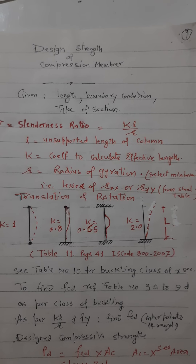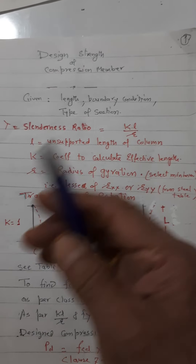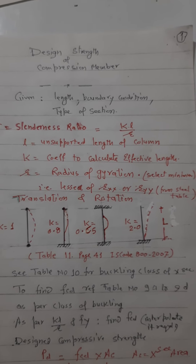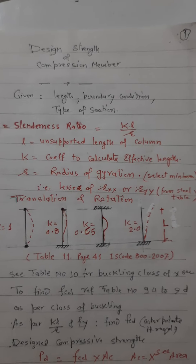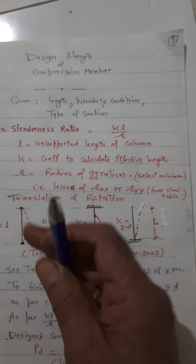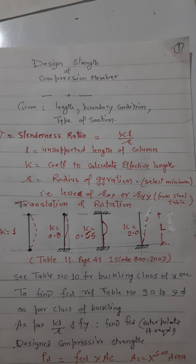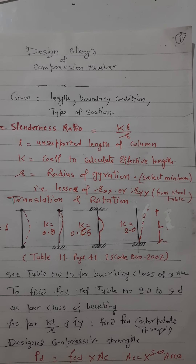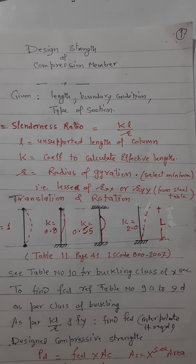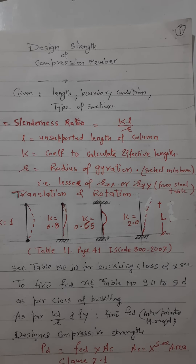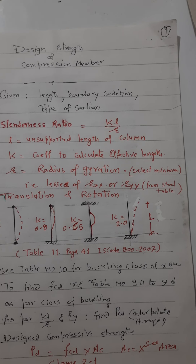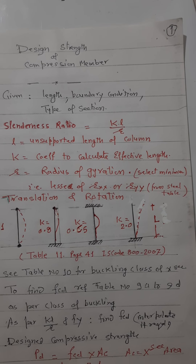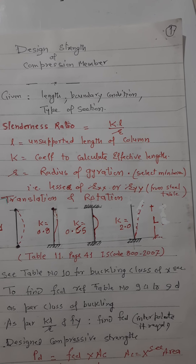When rotational movement is restricted — meaning the moment is restricted — then we say it is restrained in rotation. When displacement in any direction is restricted, we say it is restrained in translation. When neither rotation nor translation is permitted, we say it is restrained both in rotation and translation.